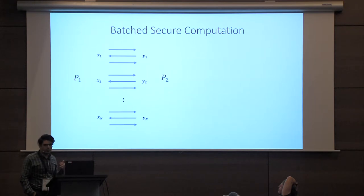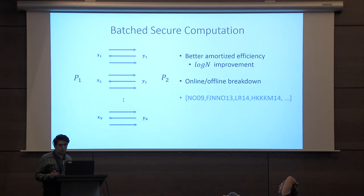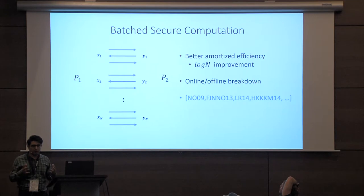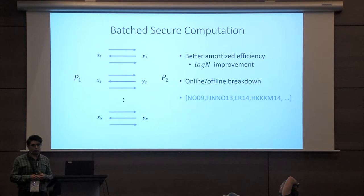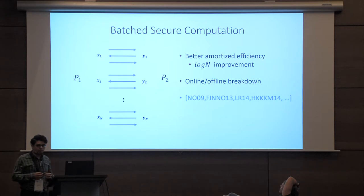Another aspect of secure two-party computation is when you want to run many different instances using different inputs — that's sometimes called batched secure computation. The goals are to get better amortized efficiency. For example, several recent works show you can get a log n factor of improvement overall — in communication, computation, and so on — where n is the number of executions. And concretely, this works out even better, with really good concrete gains when running many instances.